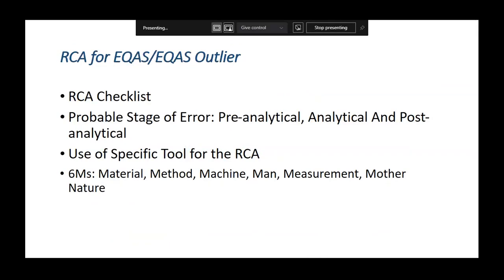For RCA in EQA and IQC outliers, the checklist is the most commonly followed approach, and based on that we can define where the error is occurring — pre-analytical, analytical, or post-analytical. We must use the specific RCA tool appropriate for the problem: Five Whys, Cosmap, or fishbone diagram. We also need to look at the six Ms to find all potential causes.